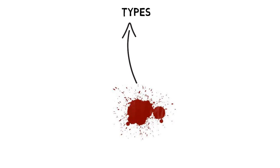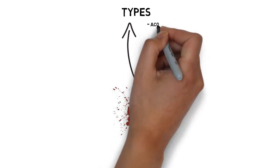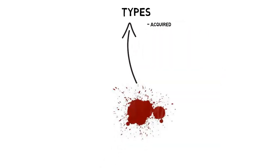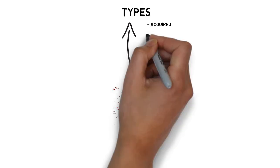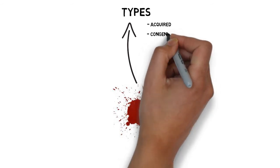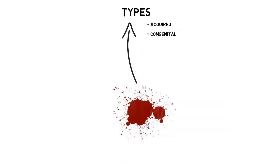Acquired can be further subdivided into two: immune acquired, such as autoimmune, drug-induced immune, or transfusion immune. The non-immune category includes infections like malaria and bacterial infections, or some traumas. Congenital disorders are intrinsic to the red blood cell itself, affecting its membrane, the enzymes, and the hemoglobin.